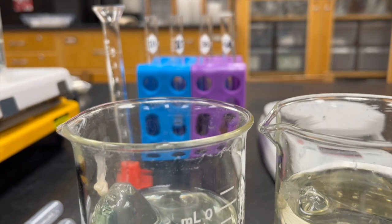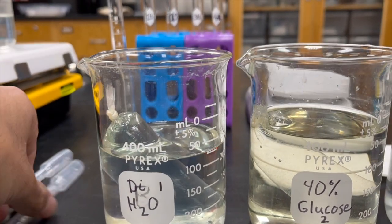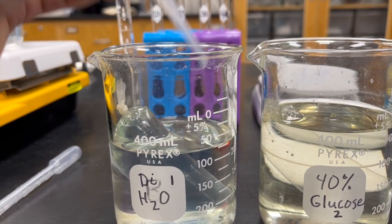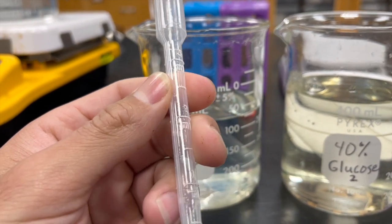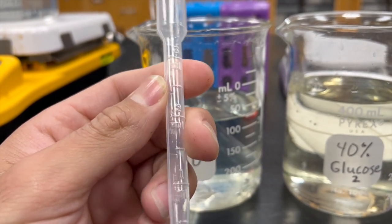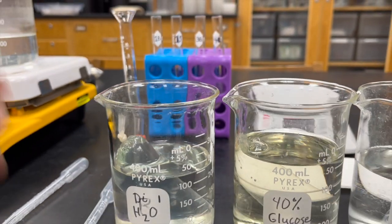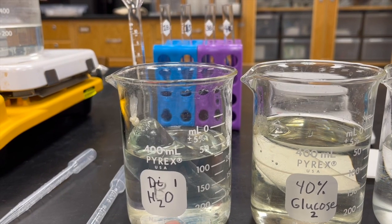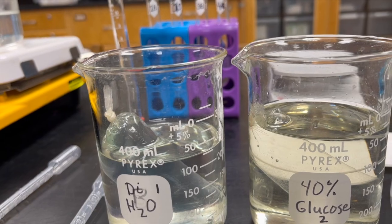Now that you already have the Benedict's in there, you're going to use these pipettes. You'll take about 4 milliliters. These pipettes have about 3, so you'll do 3 and then add an additional milliliter. For 1S, you're going to cut the sack and put that into this one.